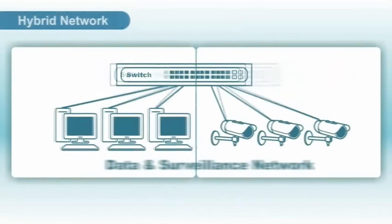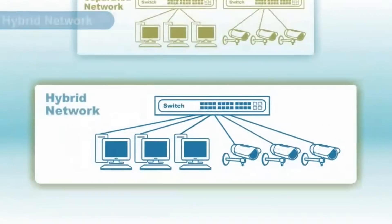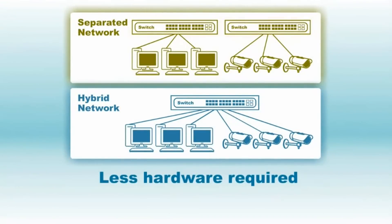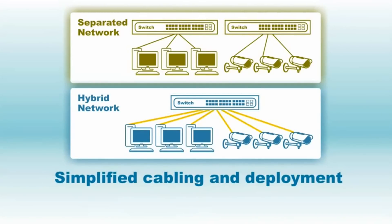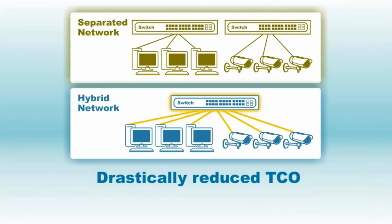By using the same infrastructure for both your data and surveillance networks, you can create a hybrid network, allowing you to use your existing hardware and wiring. Hybrid networks require less hardware, have simplified cabling and deployment, and have lower operating and maintenance costs — all resulting in a drastically reduced total cost of ownership.